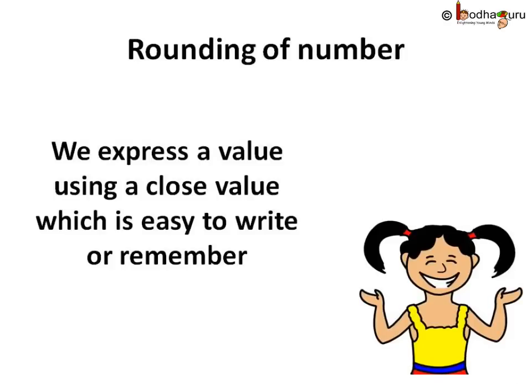Expressing a number by another number near to it, which is simpler to remember, is known as rounding of number. And the expressed nearest value of a number is known as the rounded number.